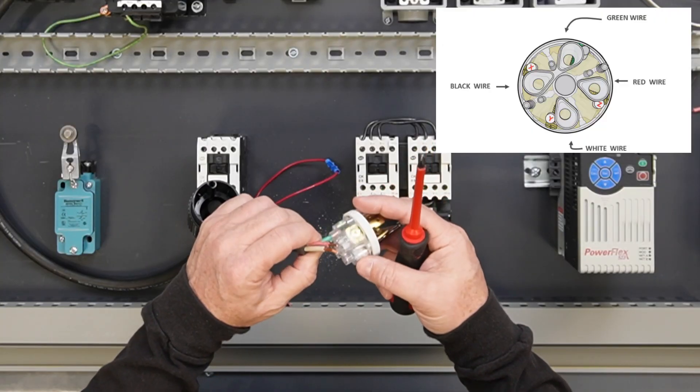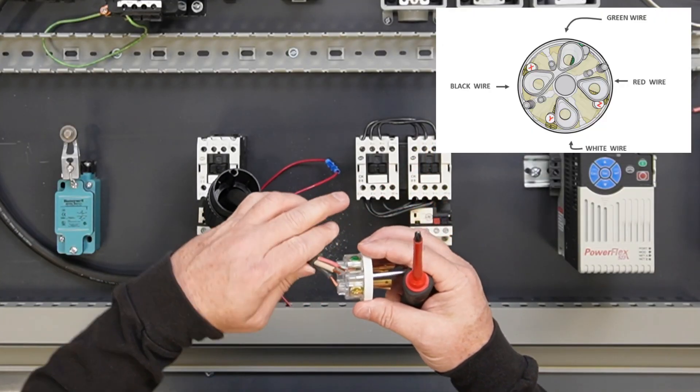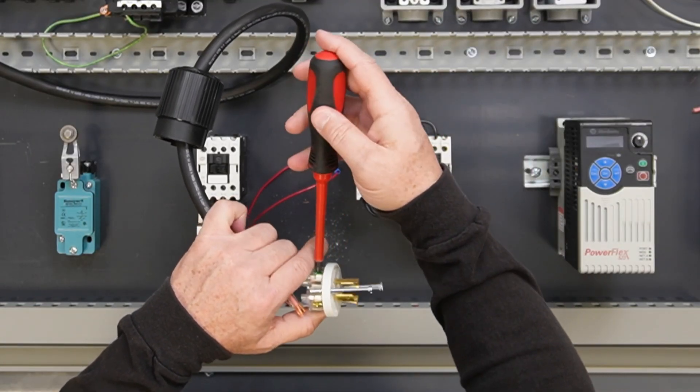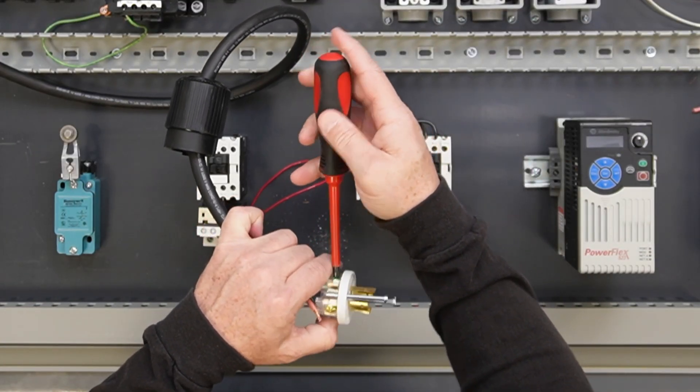Land the green wire on the ground terminal. The ground terminal will not have a label but will have a green screw to identify it. Tighten the ground terminal screw to 18 inch-pounds.